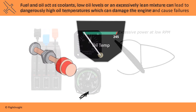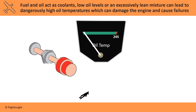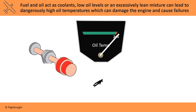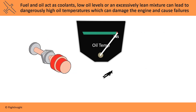If the oil temperature is reading too high, the aircraft may be operating at too high a power setting, at too low an airspeed, and with the mixture set too lean. The procedure to aid in cooling the engine is to enrich the mixture and increase airspeed by slowing the rate of climb.